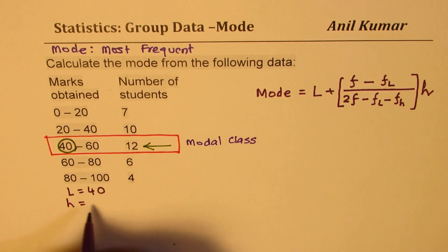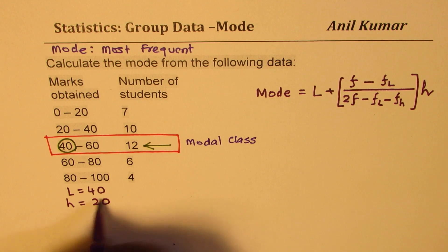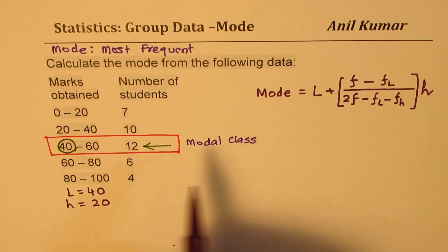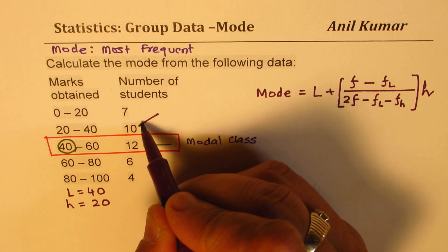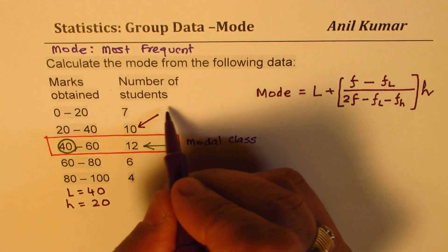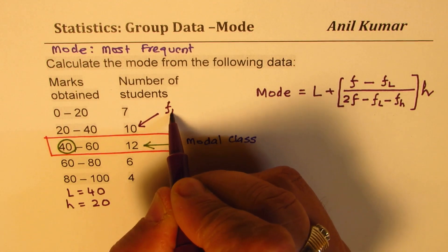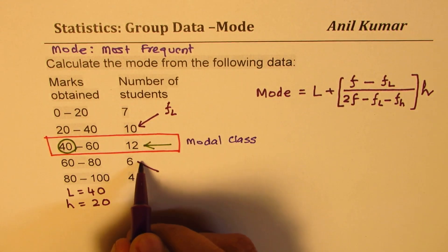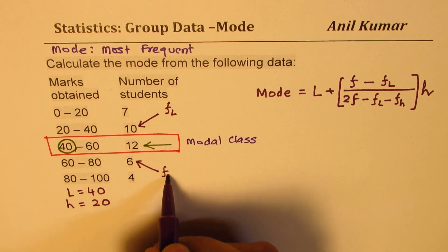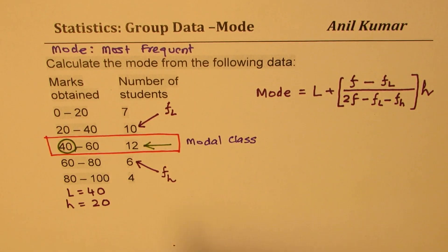In our case, the class interval is 20. And we can see that the lower frequency, which is FL, is 10. The higher one here is FH and F itself is 12.